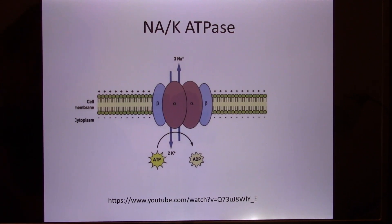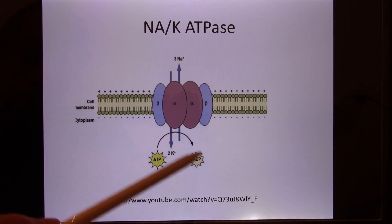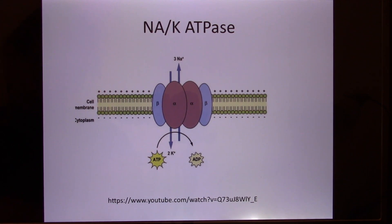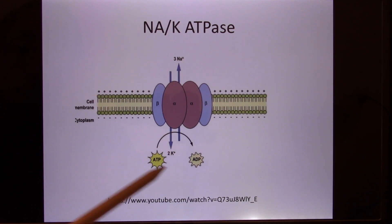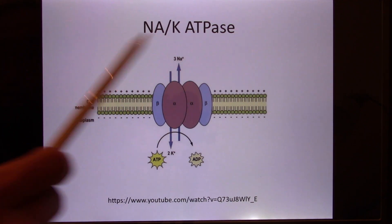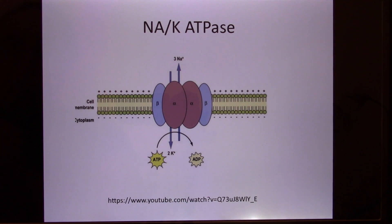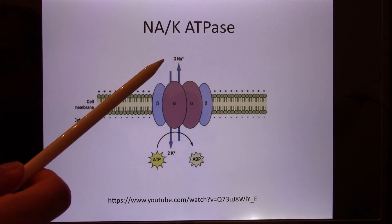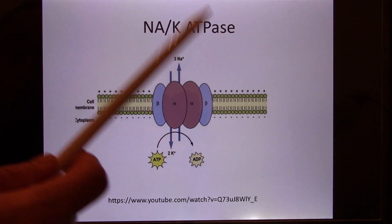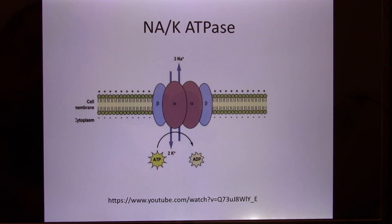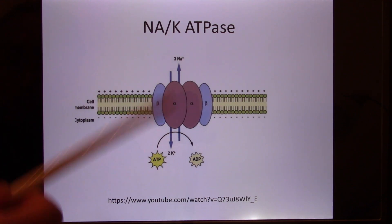Now let's focus on the charge. Every time it pumps three sodium out — sodium has positive charge — and two potassium in — potassium also has positive charge. So three positive out, two positive in: that's minus one net charge. Inside becomes more negative. The sodium-potassium pump keeps working 24 hours a day, seven days a week, making the inside more negative. So it definitely makes the inside more negative compared with outside. But is this the main contributor to the resting membrane potential of neurons? The answer is not exactly — it contributes up to about 20% of the membrane potential.